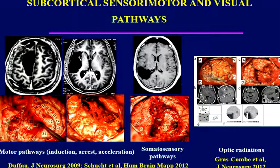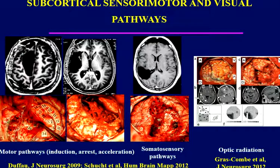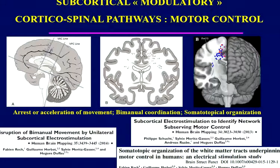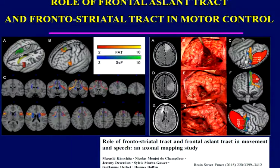DTI does not give you any functional information, despite what you might believe. When the patient is awake and you stimulate, you induce a transitory deficit corresponding to the sub-function of the sub-network at that time. This is true for movement, somatosensory pathways, and visual pathways — transiently you induce a deficit, and then you can remove that part of the brain thanks to neuroplasticity mechanisms. We also discovered a network involved in motor control, including acceleration and inhibition, related to the frontal aslant tract.